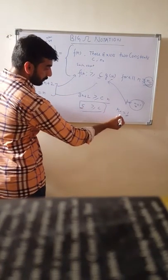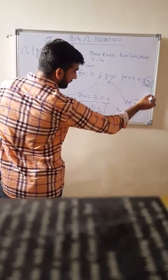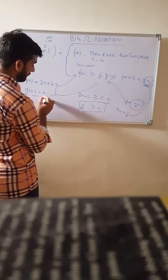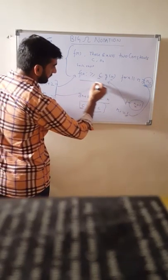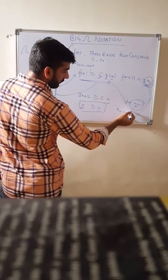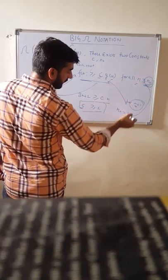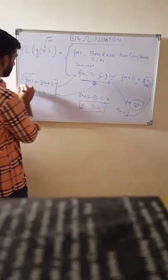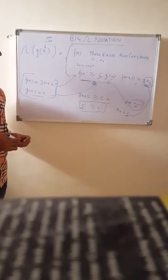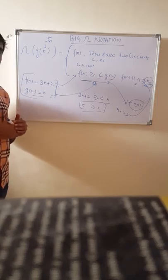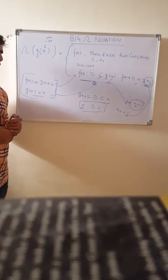For all values of n greater than n₀ = 1, these two expressions fit this definition. That is how Big Omega notation works. I hope you find it useful — please like, comment, subscribe, and share your feedback. Thanks for watching.